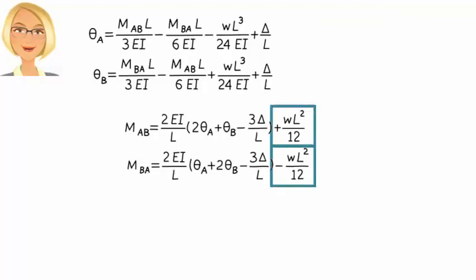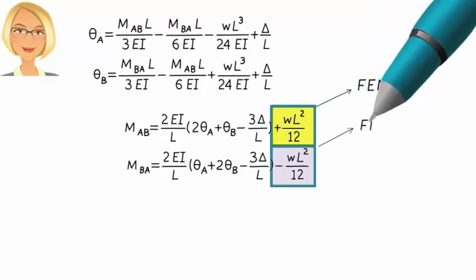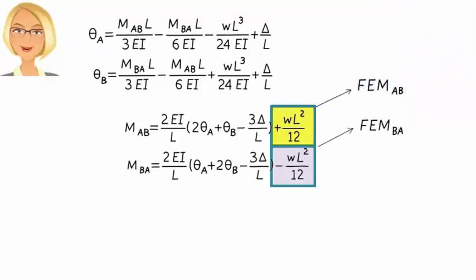As we mentioned in lecture SA29, these two terms are due to the applied load. We call them fixed-end moments. When the load is uniformly distributed, fixed-end moments are WL squared over 12 and negative WL squared over 12. But to write the slope-deflection equations in a more general form, let's use FEMAB and FEMBA instead of these load-specific terms. So our general slope-deflection equations are shown here.